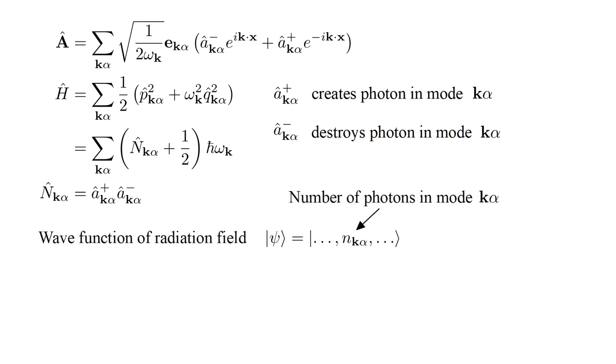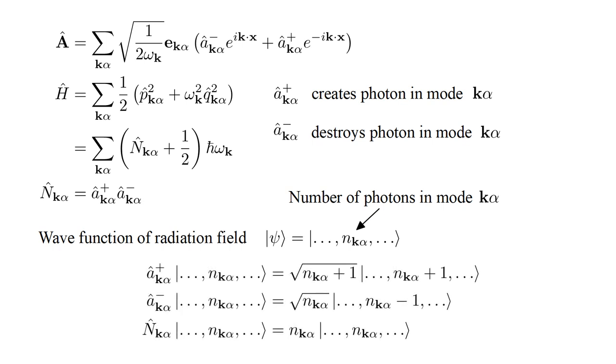Finally, the wave function of the radiation field is simply a list of the number of photons in each mode, n_{k,α}, called the occupation numbers. Application of the creation or destruction operator for a given mode modifies only that mode's occupation number.